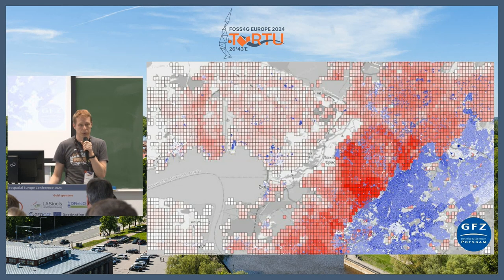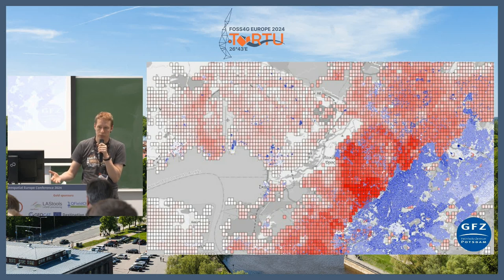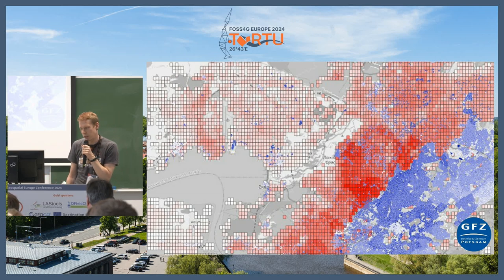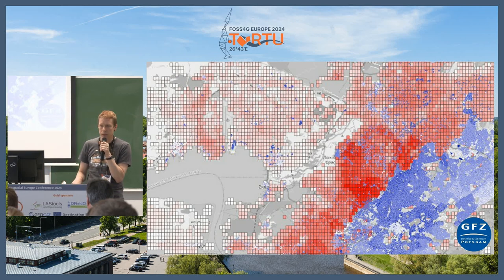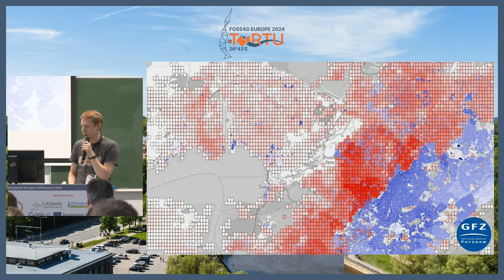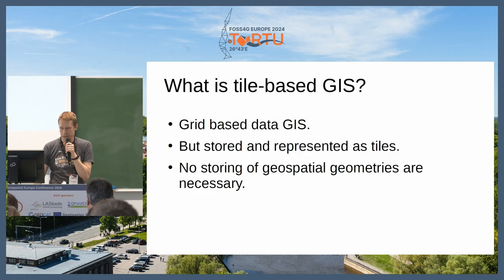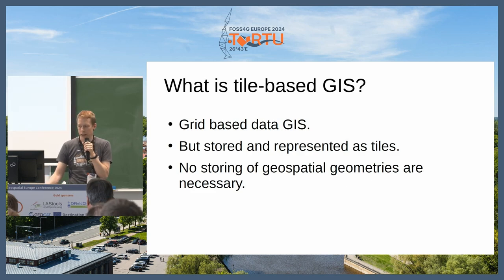One idea is to use tiles for that. Instead of using tiles just for visualization, we can also use the principle of tiles for storing data. That is an example of completeness estimation with OpenStreetMap — where people might want to map or look into it and where not — and that is already based on tiles. So a tile-based GIS is grid-based, but it's stored and represented as tiles.